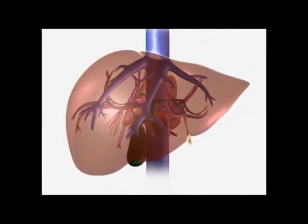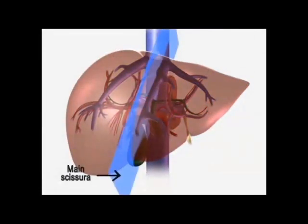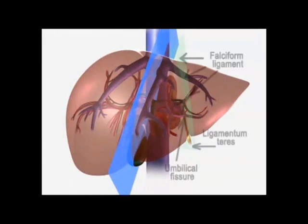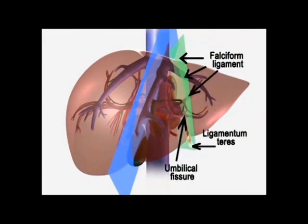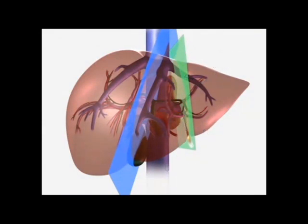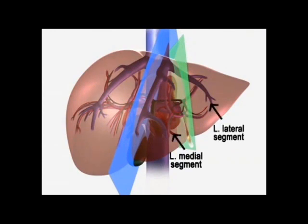A further understanding of the left liver is illustrated. One can define the liver in the plane of the umbilical fissure and falciform ligament. The umbilical fissure does not contain a scissura but rather contains the inflow pedicle to the left liver. This divides the liver into a left lateral segment containing segments 2 and 3, and a left medial segment containing segment 4.